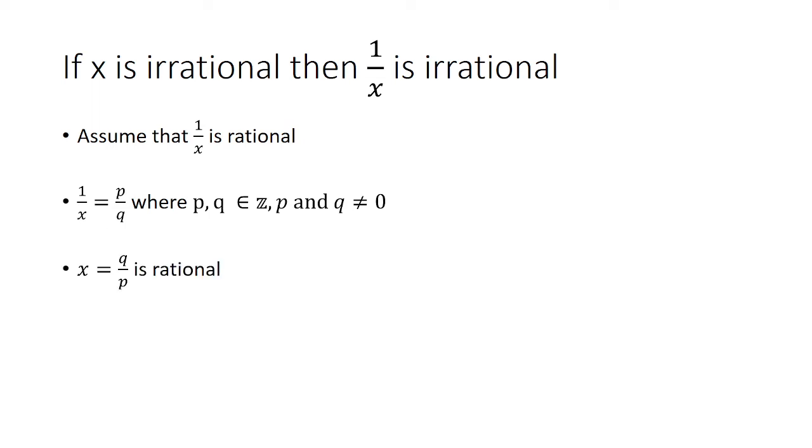Solving for x, we have to flip both sides and get that x is equal to q over p. And that is rational, because when you flip a rational function, assuming it's not 0, you get another rational function.